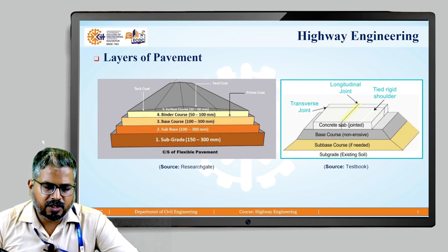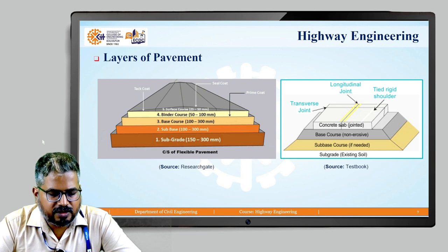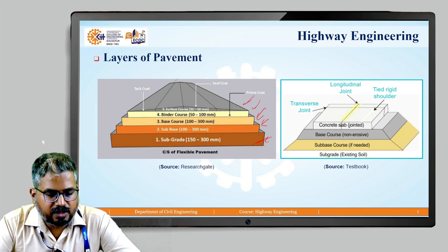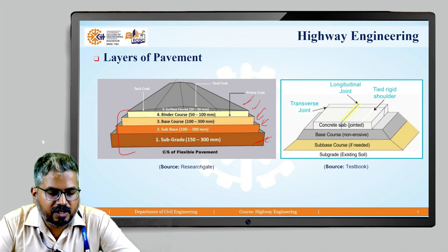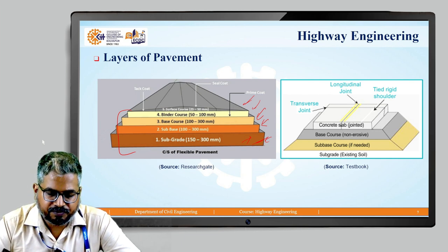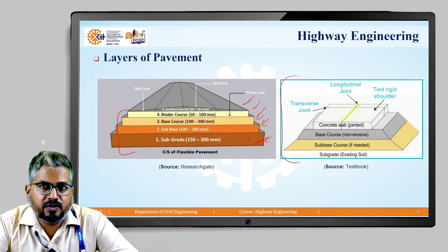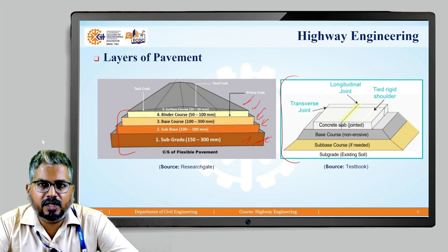In the cross-section of a flexible pavement, the bottom-most layer is the subgrade, followed by the sub base layer, then the base course, binder course, and surface course — with their respective thicknesses noted. The subgrade shown is the prepared subgrade; the natural subgrade has infinite thickness. On the right, the various layers of a rigid pavement and the types of joints provided on the top surface are also shown, which will be discussed in a later section.